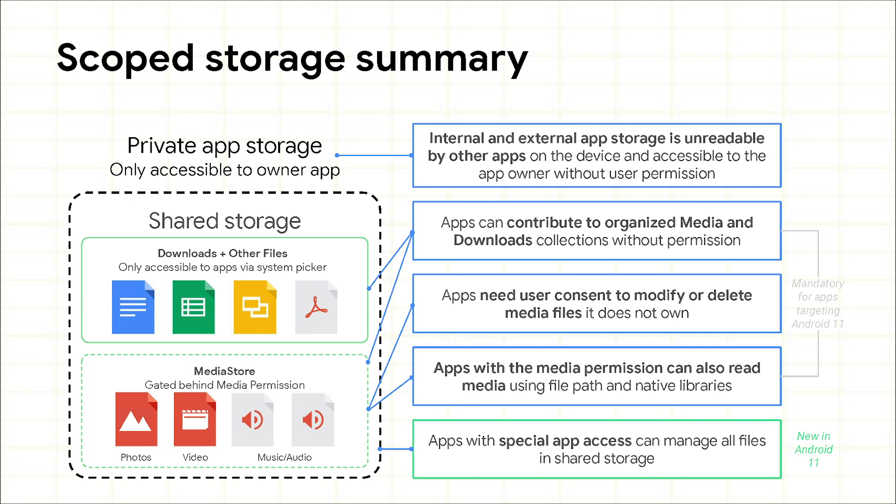The second improvement is scoped storage. We first launched scoped storage in Android 10, and since then we've listened to all of your feedback and made changes that make it clearer for users to understand and easier for developers to adapt to. Scoped storage will be mandatory for all apps targeting Android 11. Apps in scoped storage can contribute to certain well-defined collections without any permissions, but cannot modify or delete files they don't own without explicit user consent. Apps with the files and media permission can read media not just using the MediaStore or SAF APIs, but now also using file paths and native libraries. All apps running on Android 11 are restricted from accessing the contents of external app storage directories outside of their own. Finally, we've introduced a special app access permission for certain qualifying apps that permits them to manage all files in shared storage.